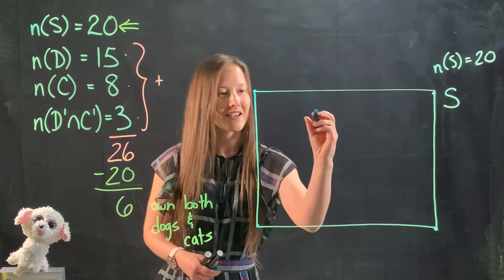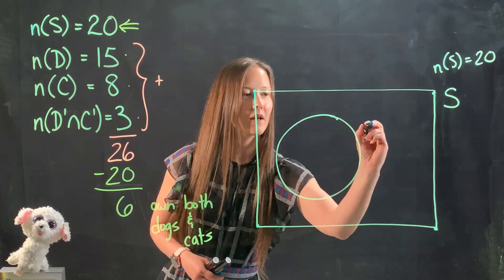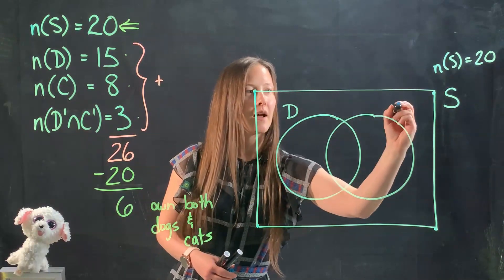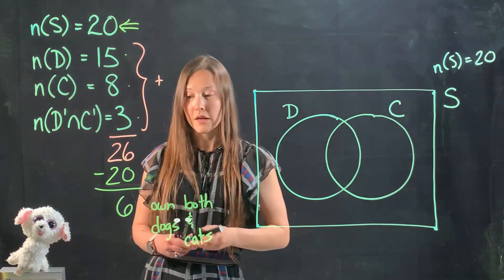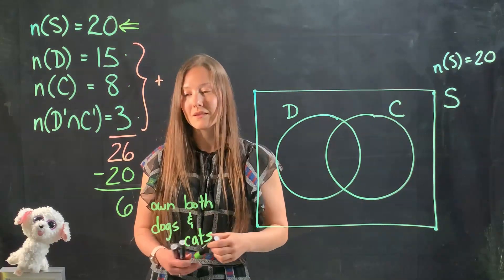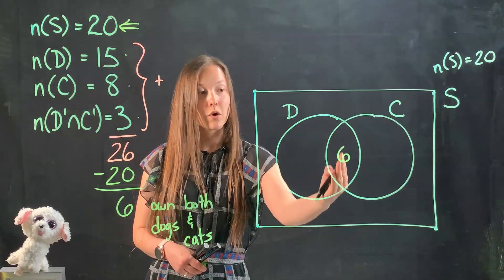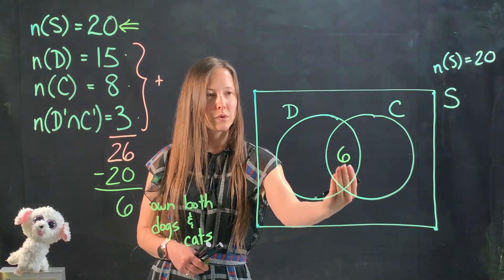Which means when I draw my Venn diagram, I'm going to have to have an intersection. So I'm gonna draw two circles that are intersecting. I'm gonna label one as D for dogs and the other as C for cats. I'm gonna take the 6 that I've figured out belongs in the intersection and I'm going to put that in the region of overlap that's representing those who own both dogs and cats.